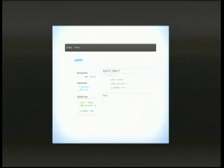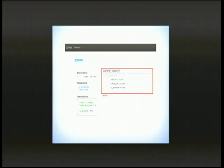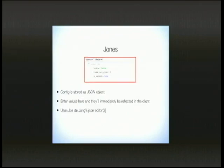Now hopefully we all know a little bit about ZooKeeper. How does Jones use these primitives to provide the system I mentioned? This is the main interface to Jones. On the right is the editor box, where you change the values. Config is stored as a JSON object. You enter values here and they're immediately reflected on the client, using a JSON editor, which is an open-source JavaScript editor.